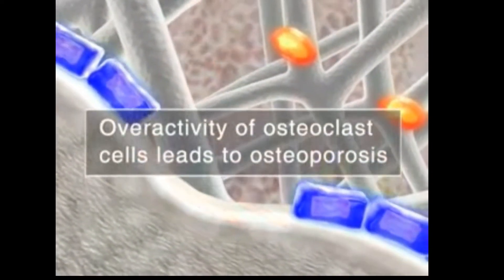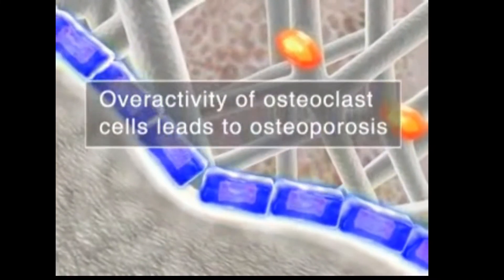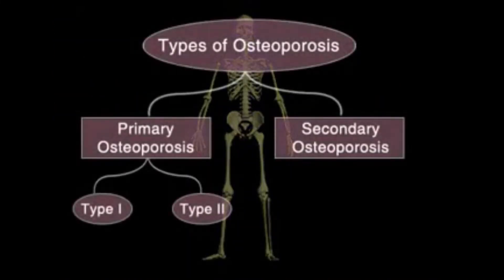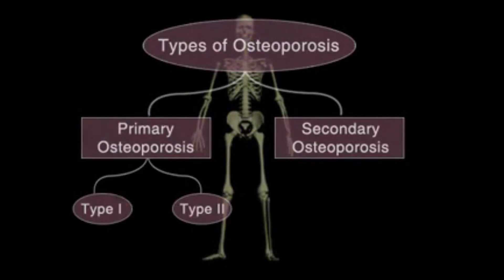Overactivity of the osteoclast cells leads to osteoporosis. There are two types of osteoporosis: primary and secondary osteoporosis. Primary osteoporosis is in turn divided into type 1 and type 2.